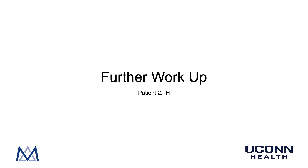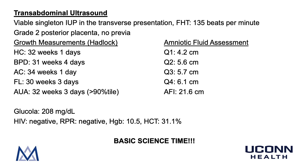Let's see the results of the further workup for our patient, IH. On transabdominal ultrasound, she is found to have a viable singleton intrauterine pregnancy in the transverse presentation, with fetal heart tones of 135 beats per minute. She has a grade 2 posterior placenta with no previa. Biometry growth measurements: head circumference 32 weeks 1 day, biparietal diameter 31 weeks 4 days, abdominal circumference 34 weeks 1 day, femur length 30 weeks 3 days. The adjusted ultrasound age is 32 weeks 3 days, putting the baby at greater than the 90th percentile. The amniotic fluid index is 21.6 centimeters. Her glucola screening test value is 208 mg/dL. HIV and RPR are negative. Hemoglobin is 10.5 and hematocrit is 31.1%.